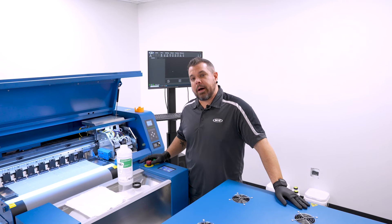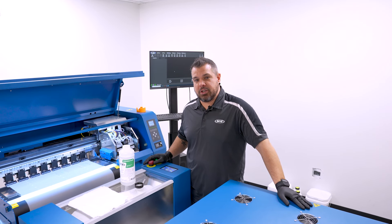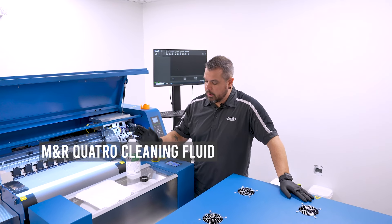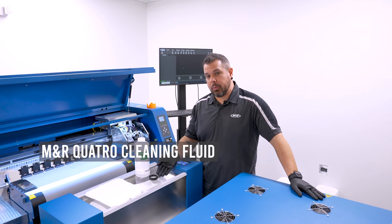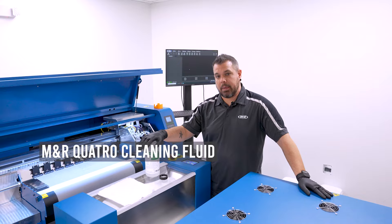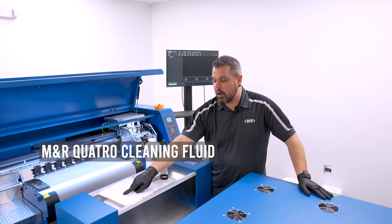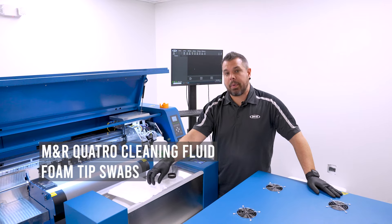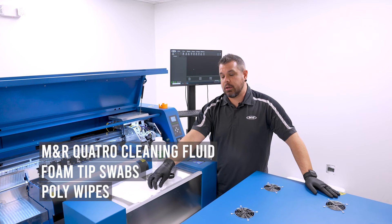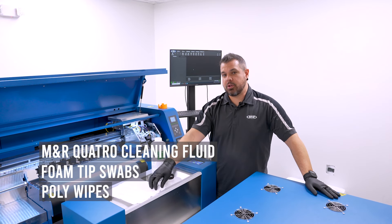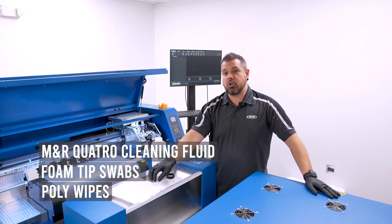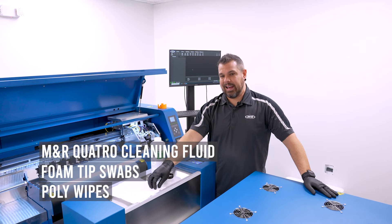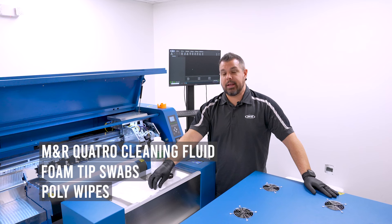So in order to clean the bottom of your head plate in your Quattro DTF machine, you're just going to need a couple items. You're going to need some Quattro cleaning fluid that I've gone ahead and poured a little bit into the cap so that I don't contaminate my bottle. I'm going to need a couple foam tip swabs just like these and you're also going to need poly wipes. The poly wipes are going to be very important because those are going to be the only material that you want to use when you're cleaning the bottom of the head plate and any interaction with the actual print heads themselves.